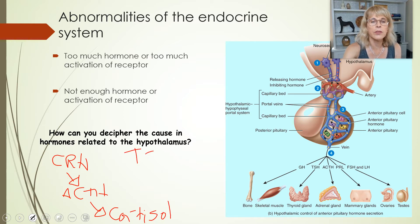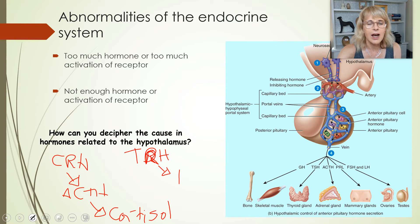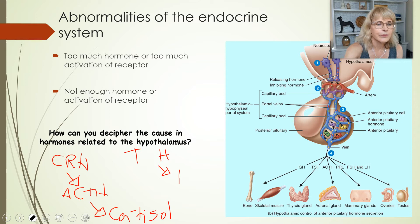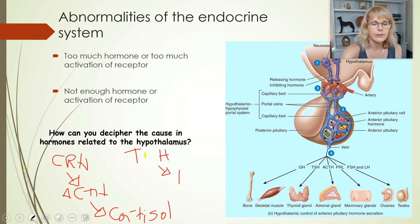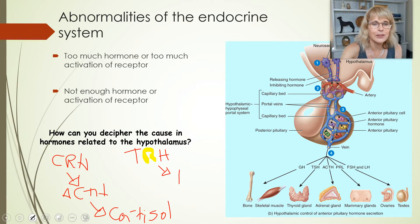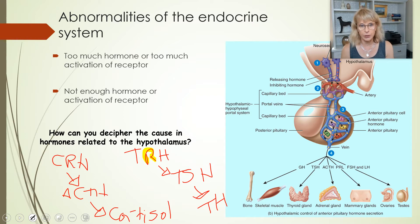The other story you need to know: when the hypothalamus wants more thyroid hormone, it releases TRH, which causes the anterior pituitary to release TSH, which causes the thyroid gland to release thyroid hormone.